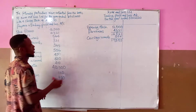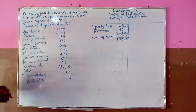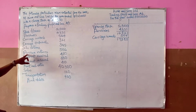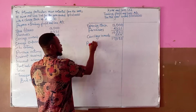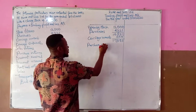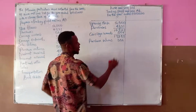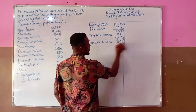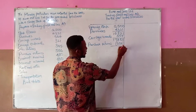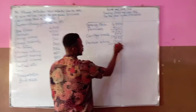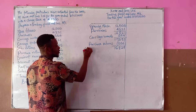Before arriving at the cost of goods available for sale, we subtract purchases returns — also called returns inwards. The purchases return here is 556. In accounting, a figure in brackets means subtract. After subtracting, we arrive at the cost of goods available for sale: 16,829.